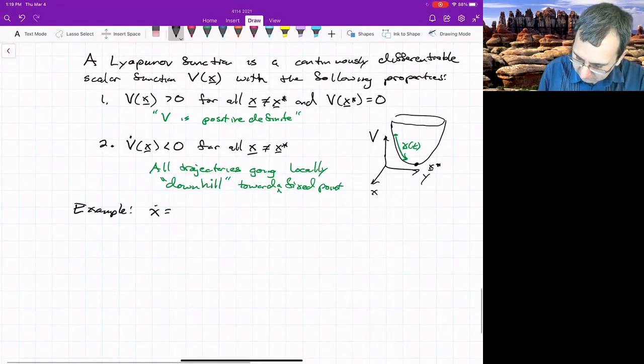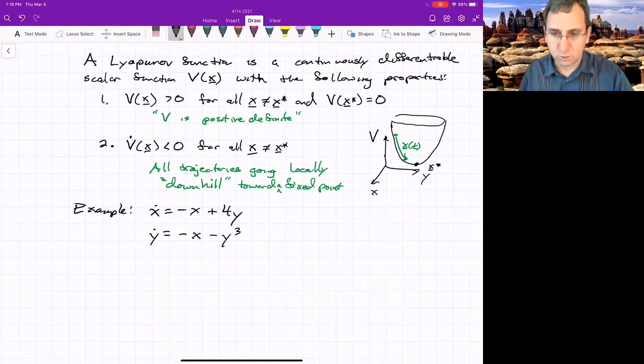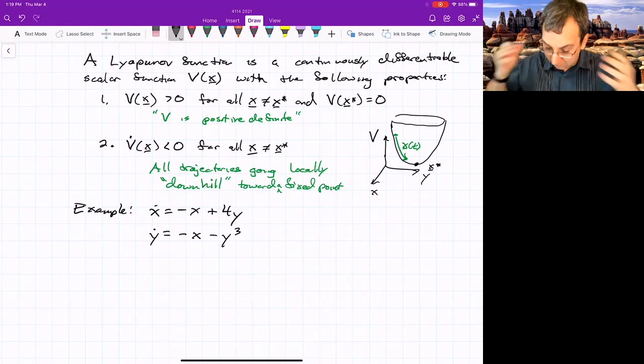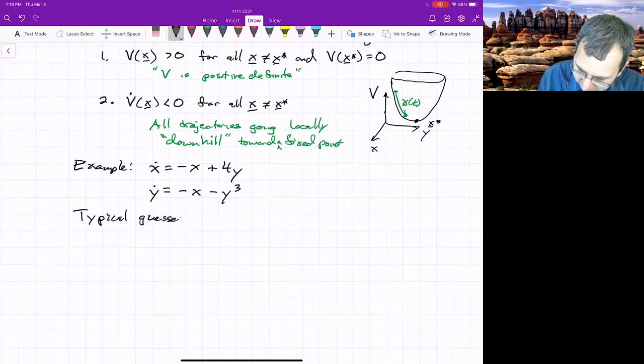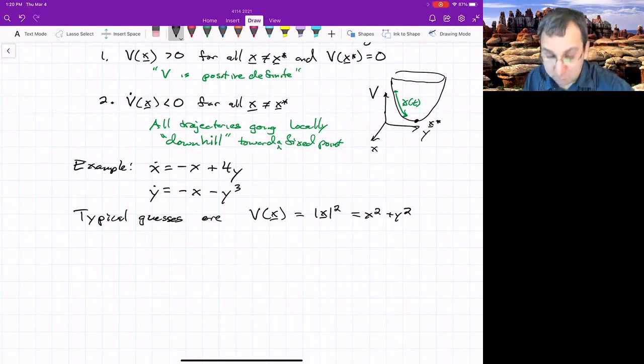Here's an example. x dot equals minus x plus 4y, so that part's linear, and then y dot is negative x minus y cubed. Maybe we have some hunch that this system has no closed orbits for whatever reason. Maybe we plugged it into one of those phase plane plotters and we didn't see any. Typical guesses are that V of x is the magnitude of x squared. So in this case, x squared plus y squared, which we could try here. I happen to know this might not work. Some variation of it might work.